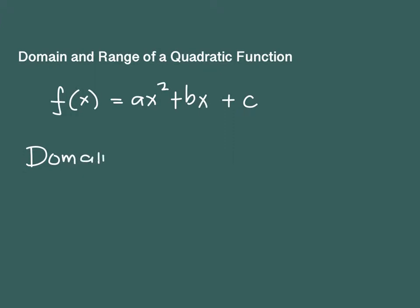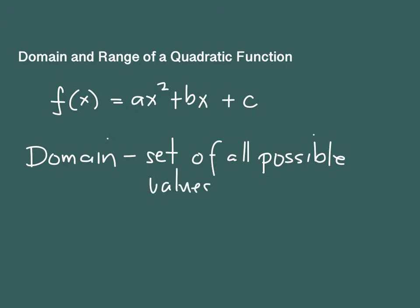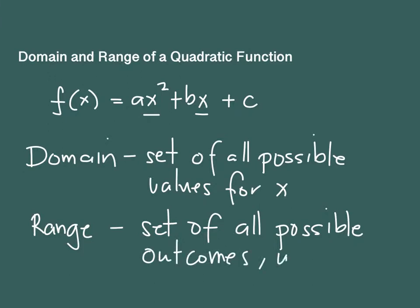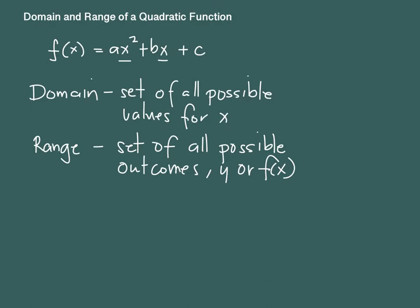For a quick review, the domain is the set of all possible values for x that you could supply to the function. The range is the set of all possible outcomes coming from the x that you have chosen to use in the function — the set of all possible outcomes, and these outcomes are the y, or f of x, because it is a function.